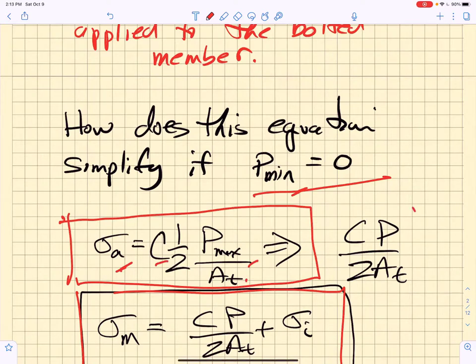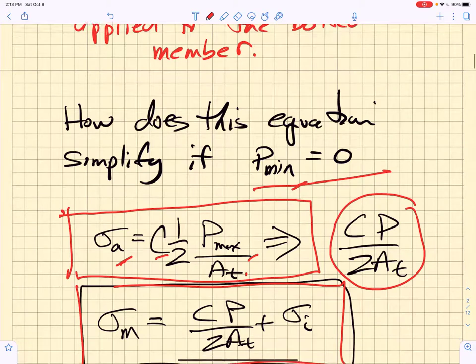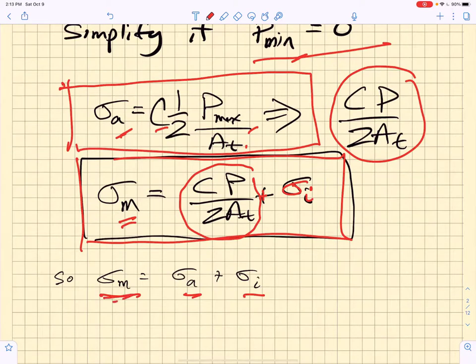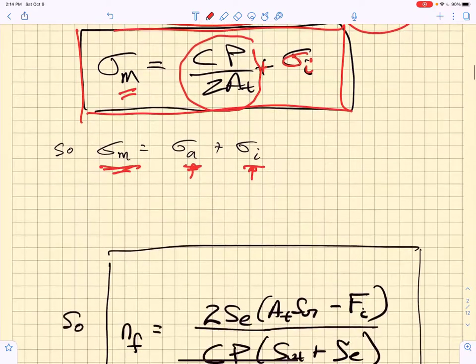So this is the stress amplitude, and it turns out that the mean stress is that same term added to the initial preload. So in that case, the mean stress is the same as the stress amplitude plus the initial pre-stress that you apply to the bolt.